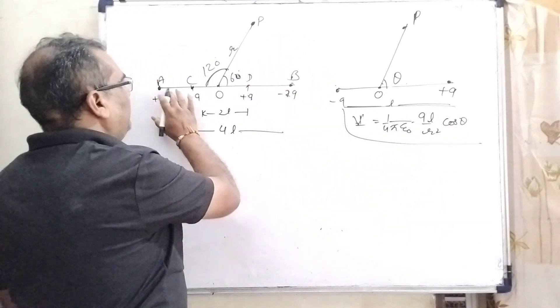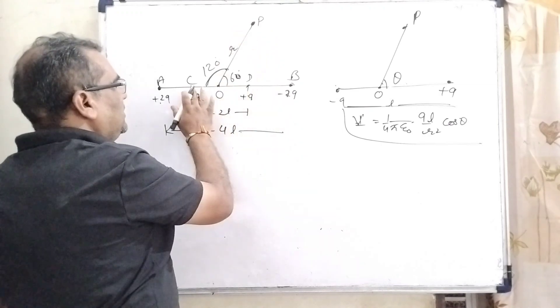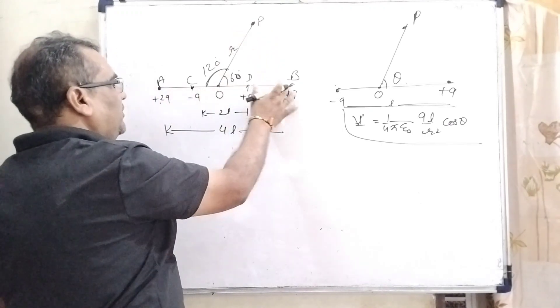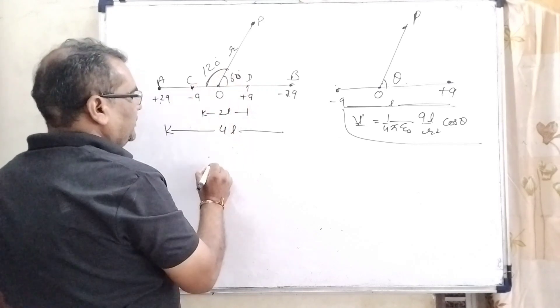Now, in the first condition let us label the points C, D, A, B. The distance from C to D is 2L and the distance from A to B is 4L. So, let us first take only this part.